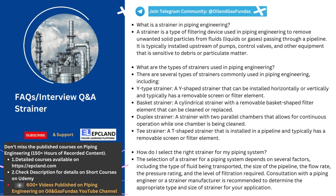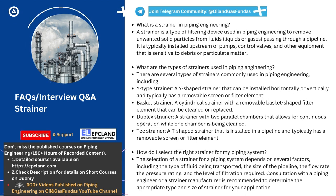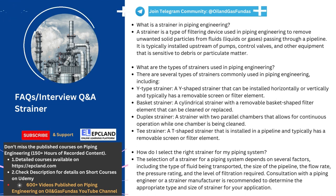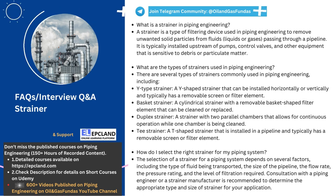The second question we will address is: what are the types of strainers used in piping engineering? There are several types of strainers commonly used in piping engineering, each with its own unique design and filtering capabilities. Firstly, Y-type strainers are shaped like a Y and are installed horizontally or vertically; they typically have a removable screen or filter element that can be cleaned or replaced. Secondly, basket strainers are cylindrical in shape and have a removable basket-shaped filter element that can be cleaned or replaced. These are commonly used for applications that require high flow rates or large particle removal.